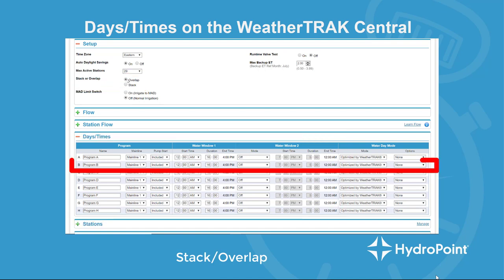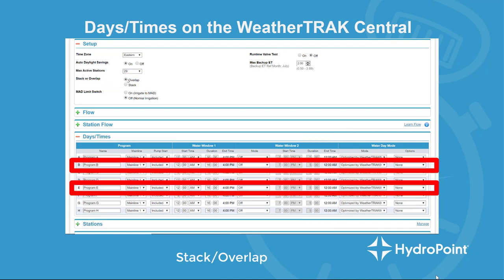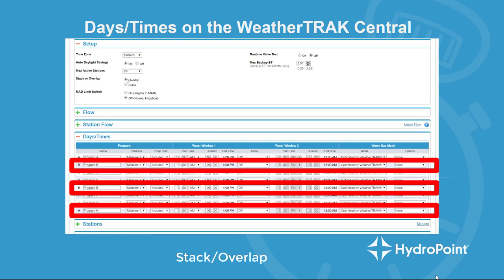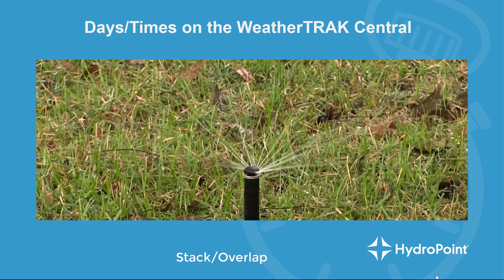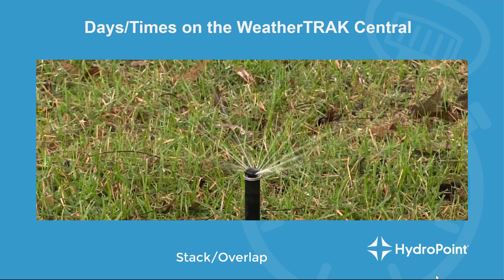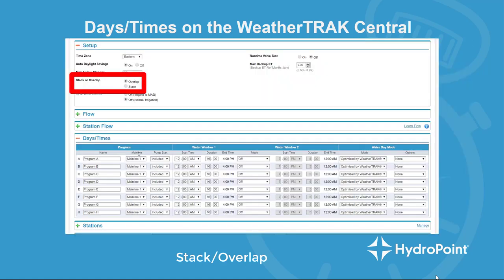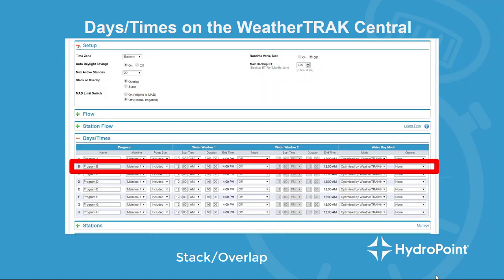In addition, switching to overlap gives the controller the ability to run multiple programs at the same time if they share time in the water window. Be careful when you switch from stack to overlap that you don't over-program the controller and have more stations running in the field than the pipes of your irrigation system can supply. If we try to run too much irrigation all at the same time, nothing will perform as you expect it to.